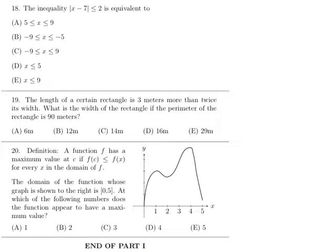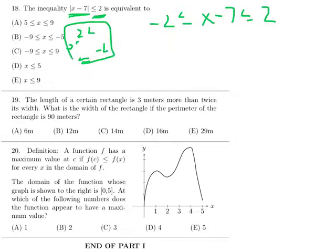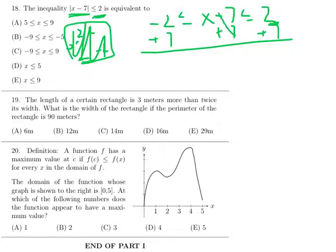This inequality, if you have an absolute value less than or equal to, then you want to set up a compound inequality like this. If that was a greater than or equal to, it would have been greater than or equal to 2, or less than or equal to negative 2. But as it is, this was a less than or equal to. So now just add 7 to everything, and you end up with 5 is less than or equal to x is less than or equal to 9.